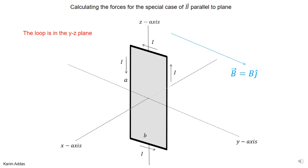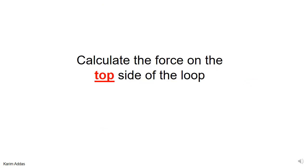In this example, you have a loop of wire in the shape of a rectangle — a closed loop. This side has length a, this side has length b, and the current is I. The loop exists in the YZ plane, with the Z axis, Y axis, and X axis oriented as shown. The magnetic field in the problem is uniform and points in the J direction.